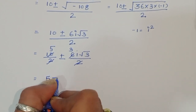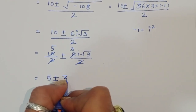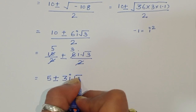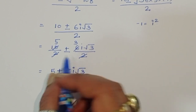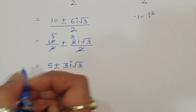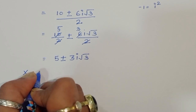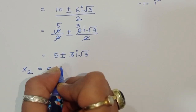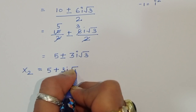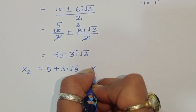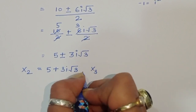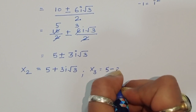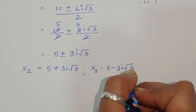So we got two values of x: x₂ equals 5 plus 3i√3, and x₃ equals 5 minus 3i√3.